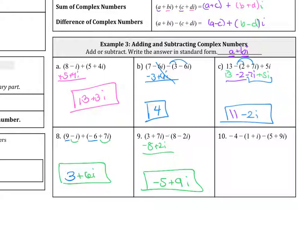For number 10, we distribute this negative here. So that becomes a negative 1 minus i. And then that happens on this left side too. Negative 5 and then minus 9i. And then that negative 4 is still in front.